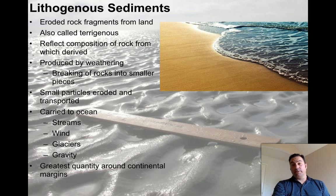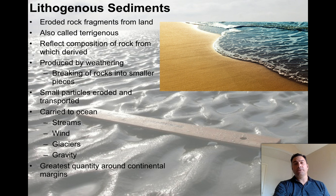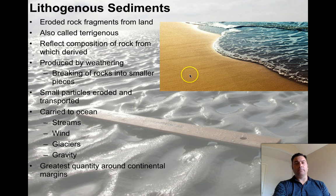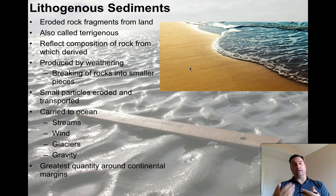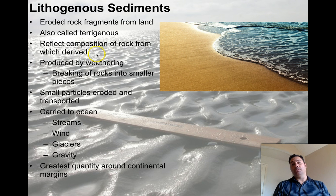Let's jump into lithogenous sediments — these are the most commonly understood and experienced ones, unless you live on certain tropical islands where you get biogenous sediments. Lithogenous sediments are eroded rock fragments from land. If you're in California they tend to be orange because there's a lot of quartz and feldspar. In Florida they tend to be white because the sand is biogenous. In Hawaii it's usually black because the island chain has a lot of basalt, a black rock that gets broken up. In other words, it's derived from what rocks exist in that area. It's also called terrigenous, meaning land-generated, and reflects the composition of the rock from which it arrived.